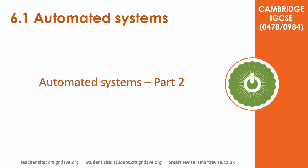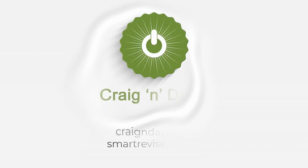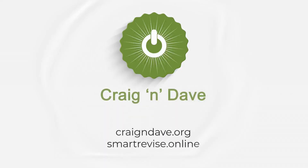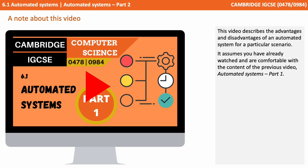This is the second in a two-part series on automated systems. This video describes the advantages and disadvantages of an automated system for a given scenario. It assumes you've already watched and are comfortable with the content of the previous video.